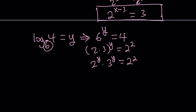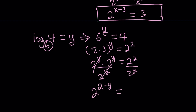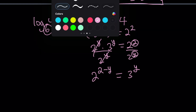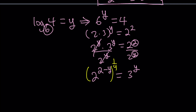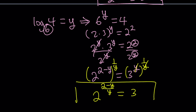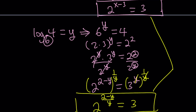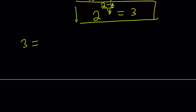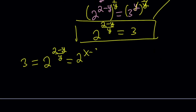My goal is to isolate the 3. So let's divide both sides by 2 to the power y. That gives us 2 to the power 2 minus y equals 3 to the power y — we subtract the exponents because that's division. Now I want to get a 3, so let's raise both sides to the power 1 over y. That cancels out the y on the right-hand side, and we end up with 2 to the power (2 minus y) over y equals 3.